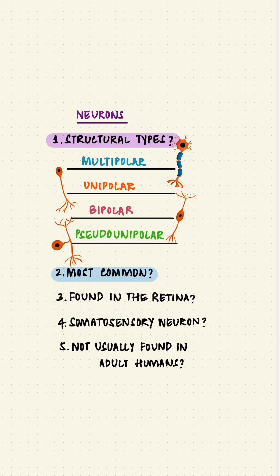Multipolar neurons are the most common, so most neurons in the body look like this. The retina has multiple cells, one of which is a bipolar cell, with two processes going in either direction.